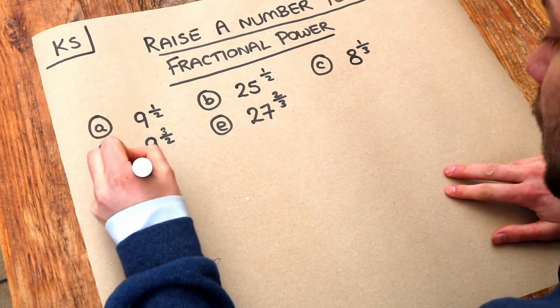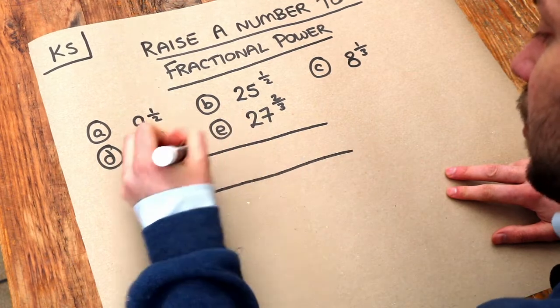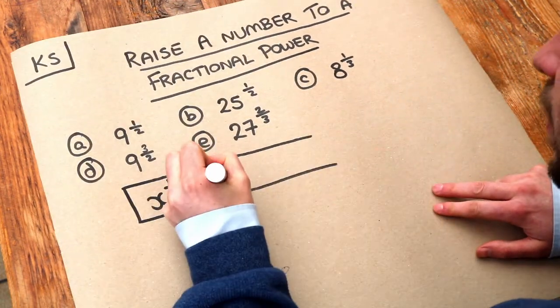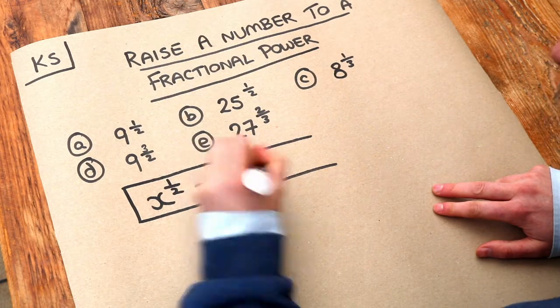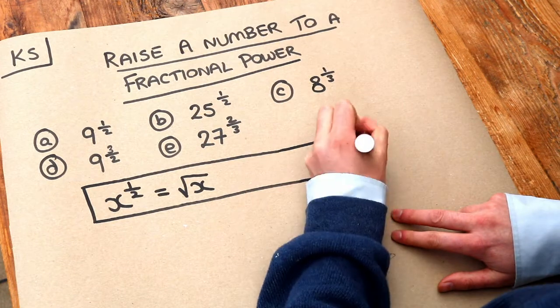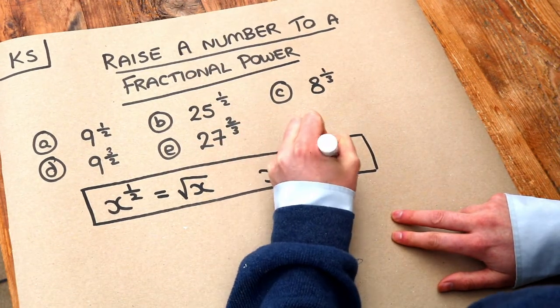Now let's get some basics first. If we were to have some number x to a power of half, that would be the same as doing the square root of that number. And if we wanted something to the power of, say, a third, then we'd do the cube root of that number.